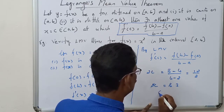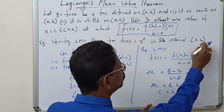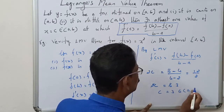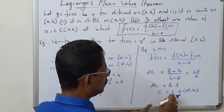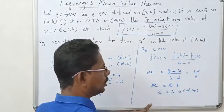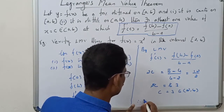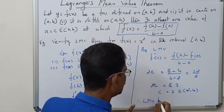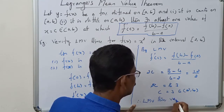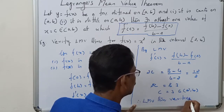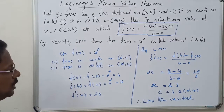Therefore c = 3, and c = 3 belongs to the open interval (2, 4). Since 3 lies between 2 and 4, Lagrange's mean value theorem is verified.